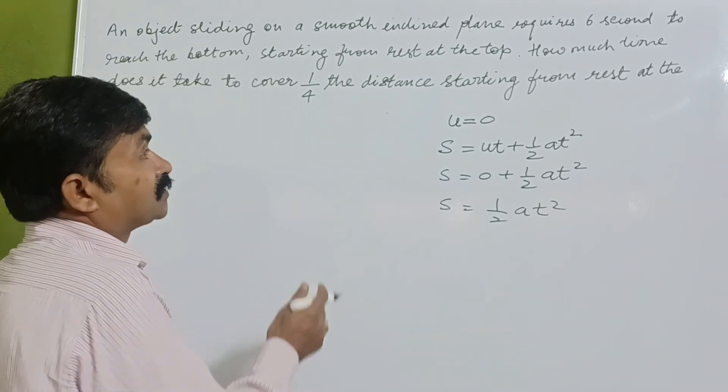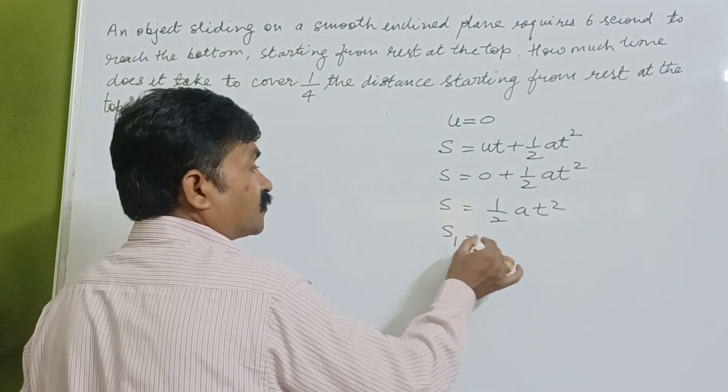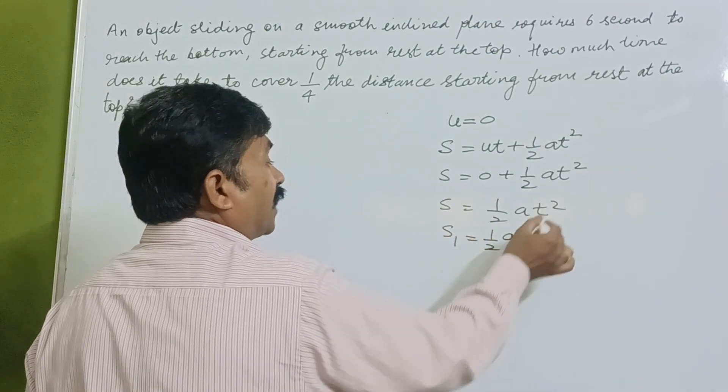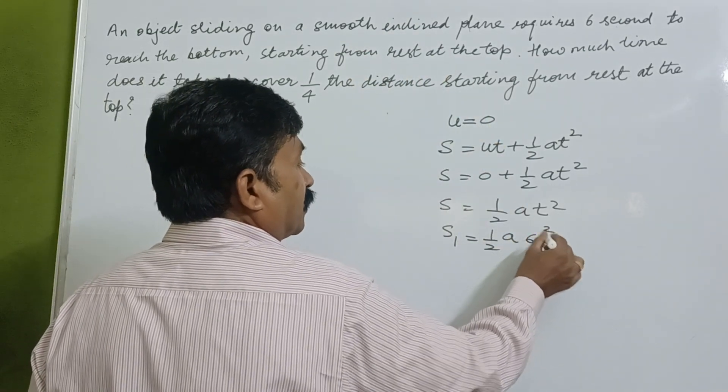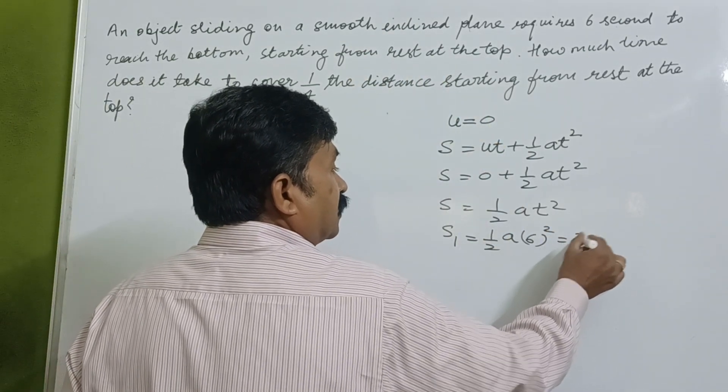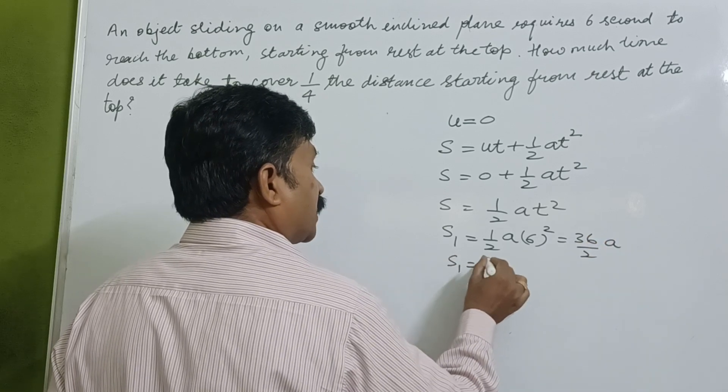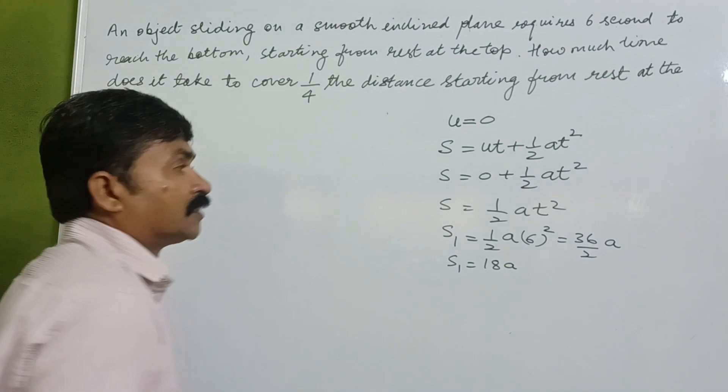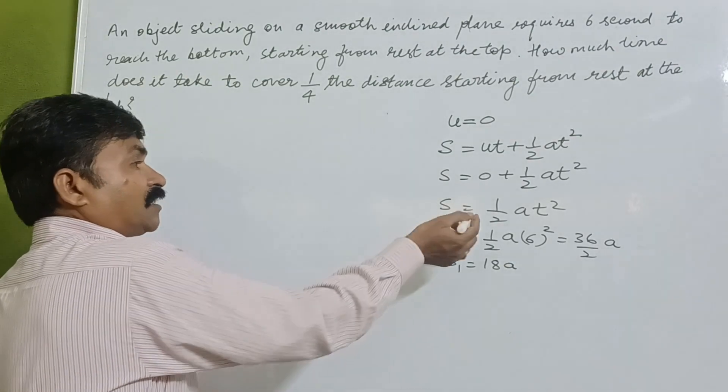If we are taking s1 which is equal to 1/2 a times time—given to us that is six seconds to reach at the bottom—it is 36/2 a, so s1 is 18a. Now we can formulate it for two distances.